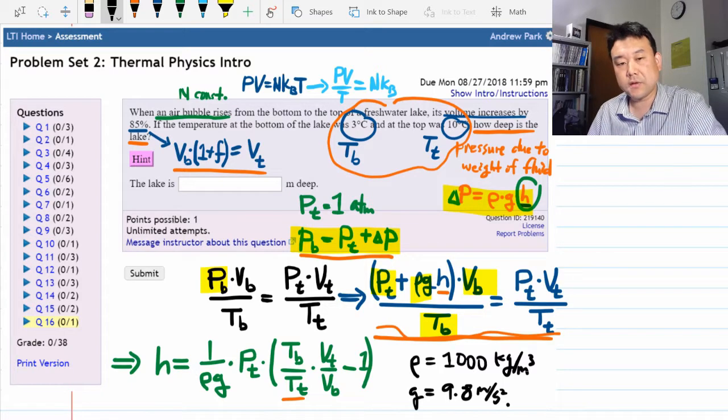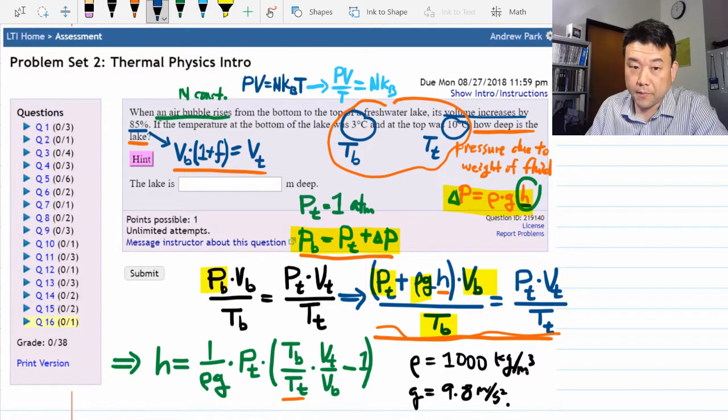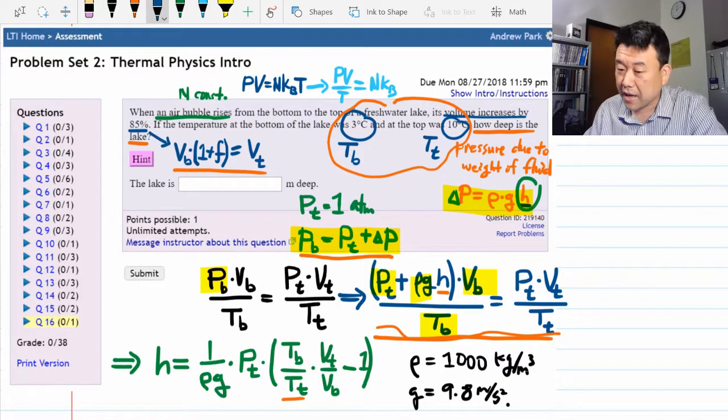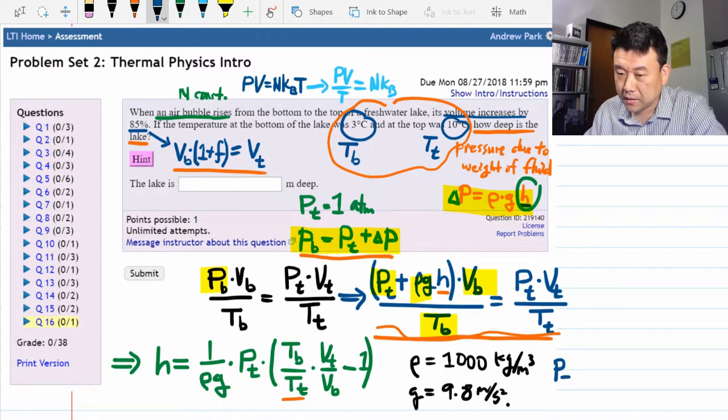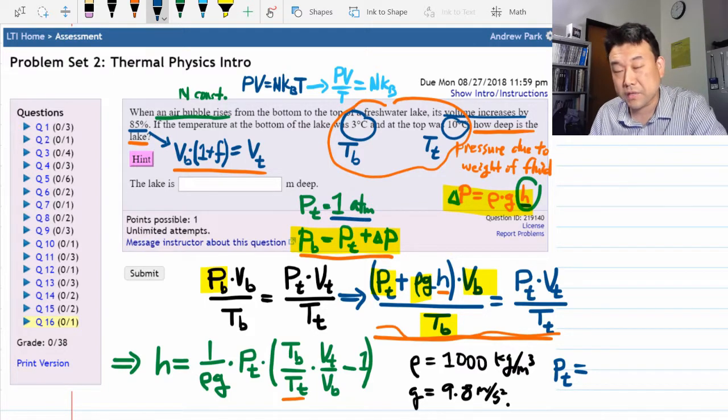One last thing you need to be very careful about is you cannot plug in Pt equals 1 atmosphere. I know I said it's 1 atmosphere, but you need to plug this in SI units.